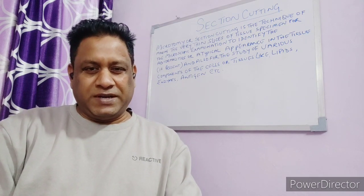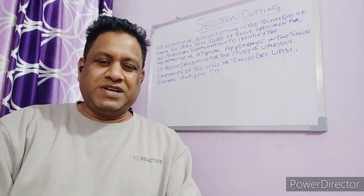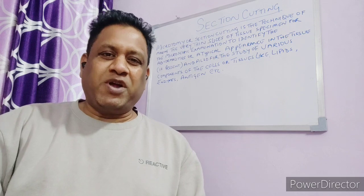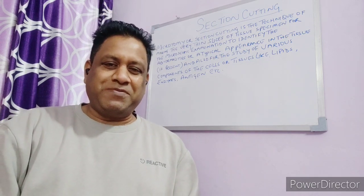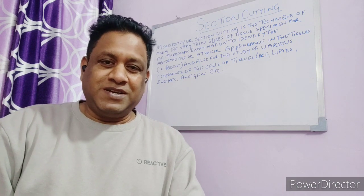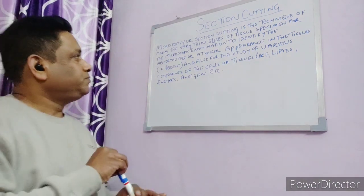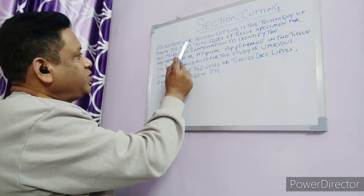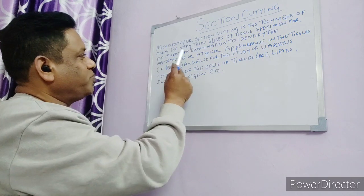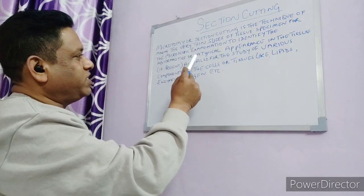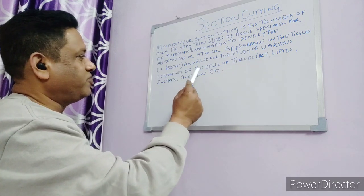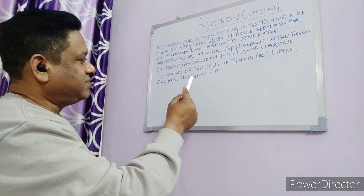Section cutting is one of the most important parts of histopathology, because the finer the sections cut, the better the quality of staining, which enhances the quality of microscopy and enables a better diagnosis. Section cutting is the technique of making very thin slices of tissue specimens for microscopy examination — to identify abnormalities or atypical appearance in the tissue, and for the study of various components of cells or tissues like lipids, enzymes, antigens, etc.